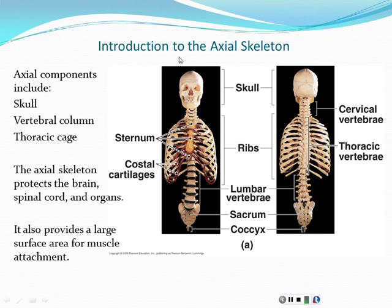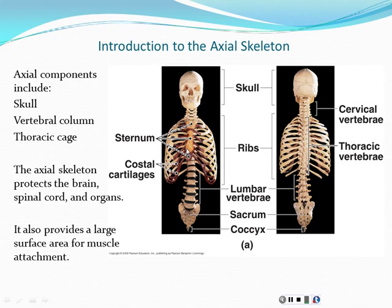The skull, vertebral column, and thoracic cage are protection bones for the most part. The vertebrae do support the weight of the body, but axial skeleton bones are mainly designed to protect delicate structures - the cranium protects the brain, the thoracic cage protects the soft squishy lungs. The broad flat surfaces of the axial skeleton also provide a great place for muscle attachment. The principal muscles that move the arms and legs actually attach to the axial skeleton.